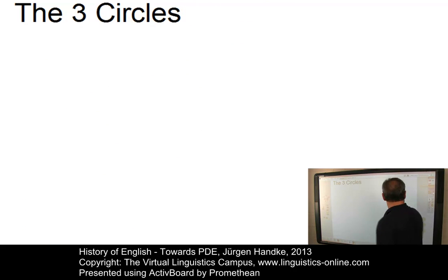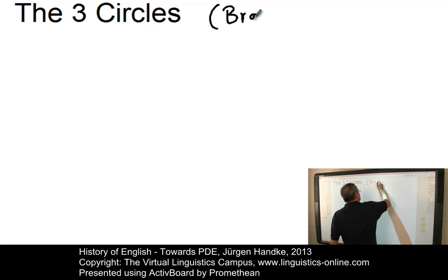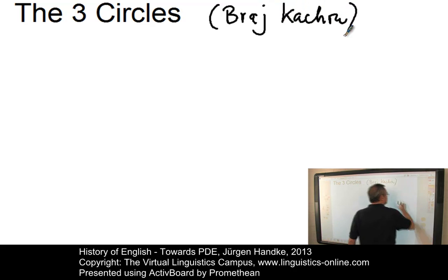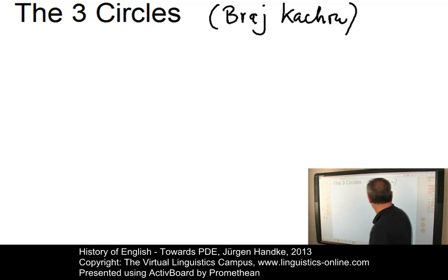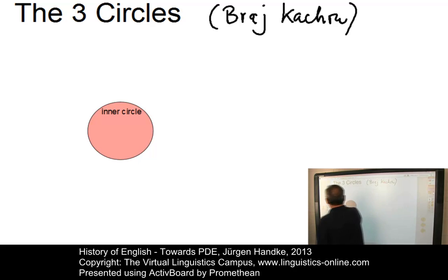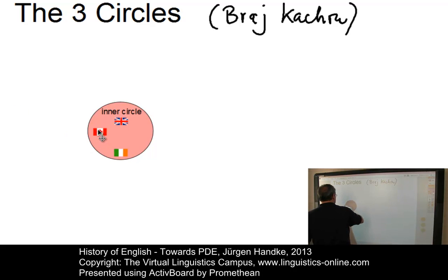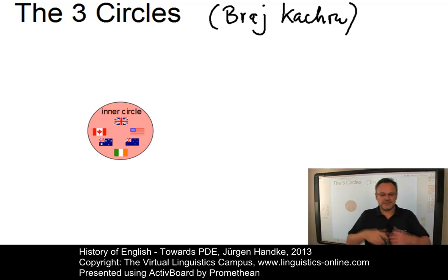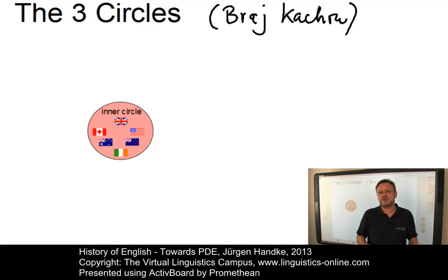According to the Indian linguist Braj Kachru, the spread of English around the world can be defined in terms of three concentric circles. The inner circle refers to the traditional historical and sociolinguistic origins of English where it is used as a first or native language — that concerns Great Britain and Ireland, North America (Canada and the United States), and Australia and New Zealand. The inner circle constitutes about 400 million speakers, almost 70% of which are from the United States.